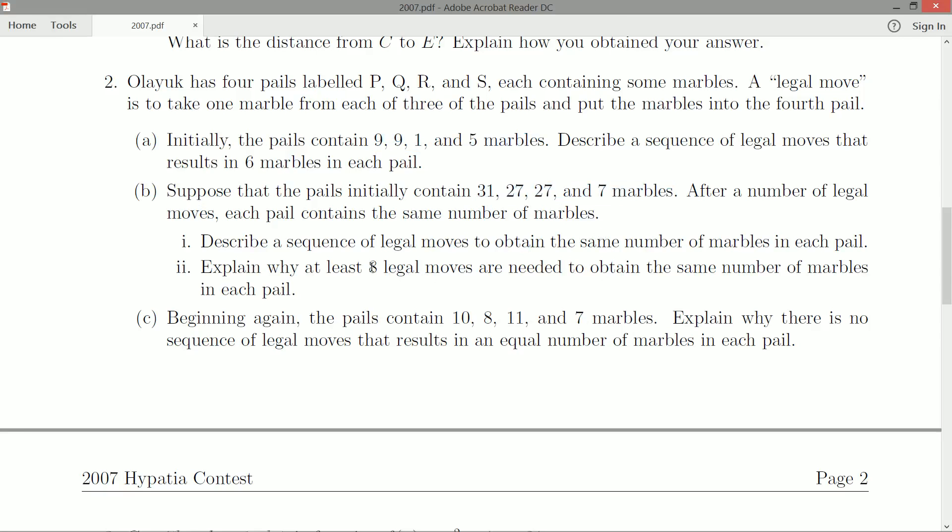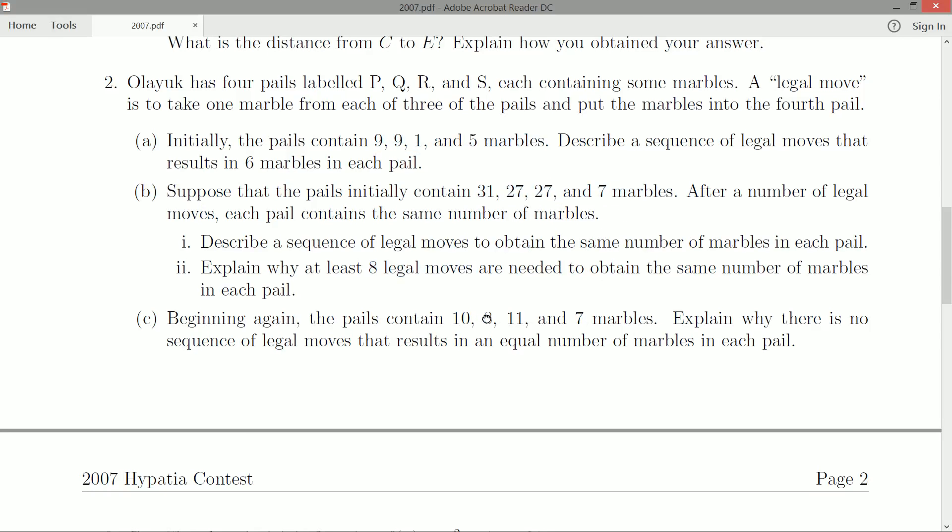But here, two evens and two odds, you will never be able to get all odds or all evens. So it had nothing to do with the actual numbers here, 10, 8, 11, and 7. It was something deeper. So the oddness and evenness or parity.